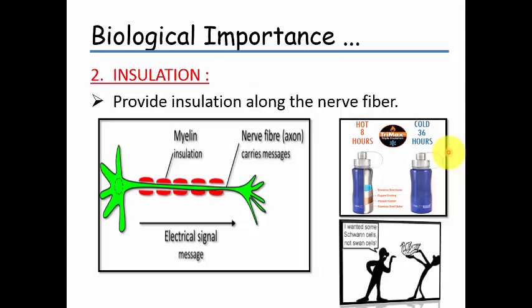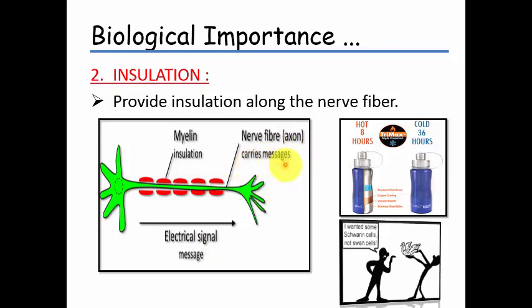Next is the insulation function of phospholipids. Just as an insulated water bottle has a layer that prevents the effect of external temperature on the inner substance, phospholipids provide insulation to the body. The nerve fiber, which carries electrical signals, is insulated by the myelin sheath. Phospholipids provide insulation to the myelin sheath and also to the body - this is an important function of phospholipids.